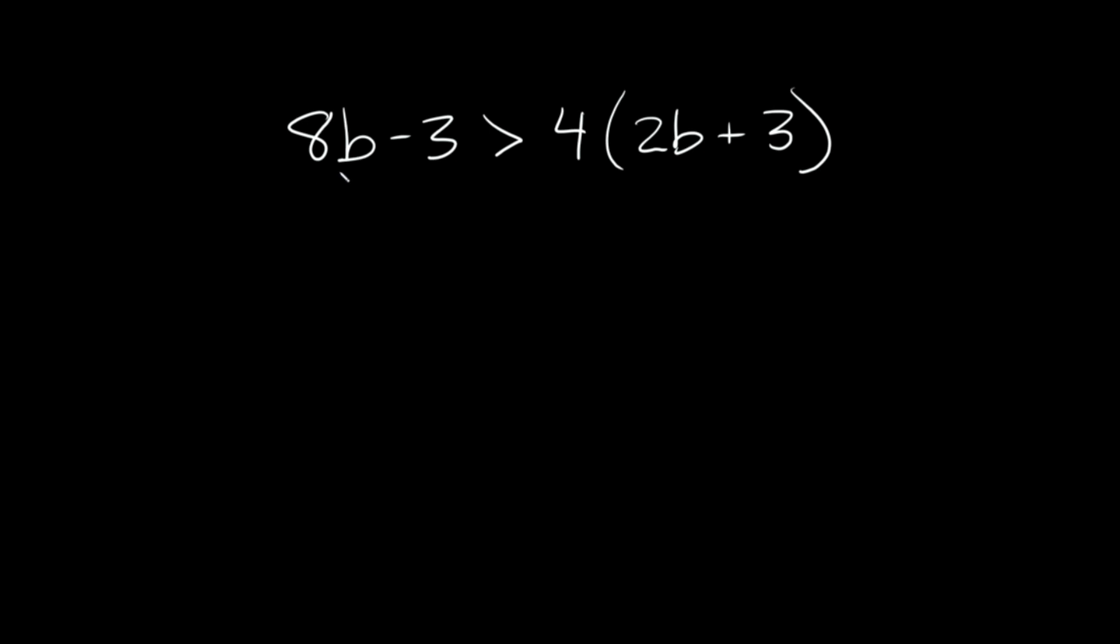So last problem. Here we have 8b minus 3 is greater than 4 times in parentheses 2b plus 3. So again, first thing we want to do is just simplify our equation up here. Here, again, we have the option of dividing this whole side by 4 and this side by 4, or we could distribute. In this case, again, we're going to distribute.